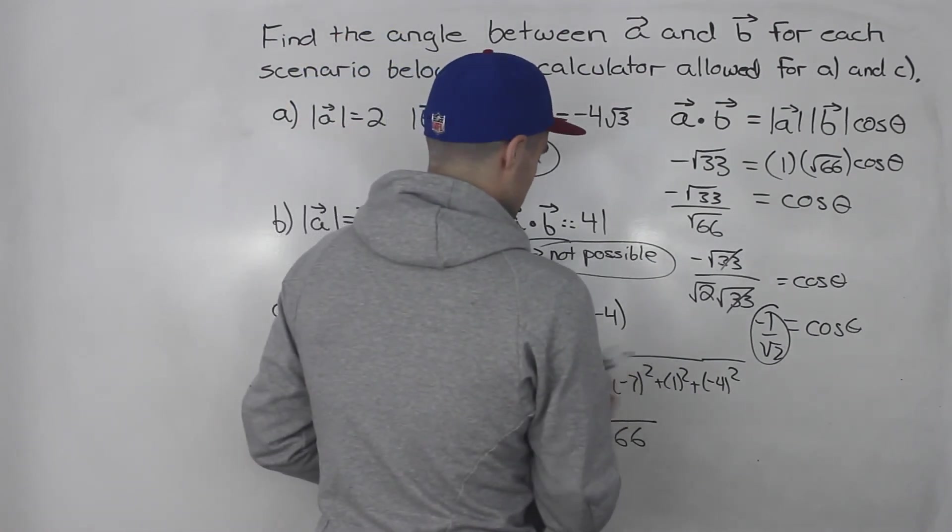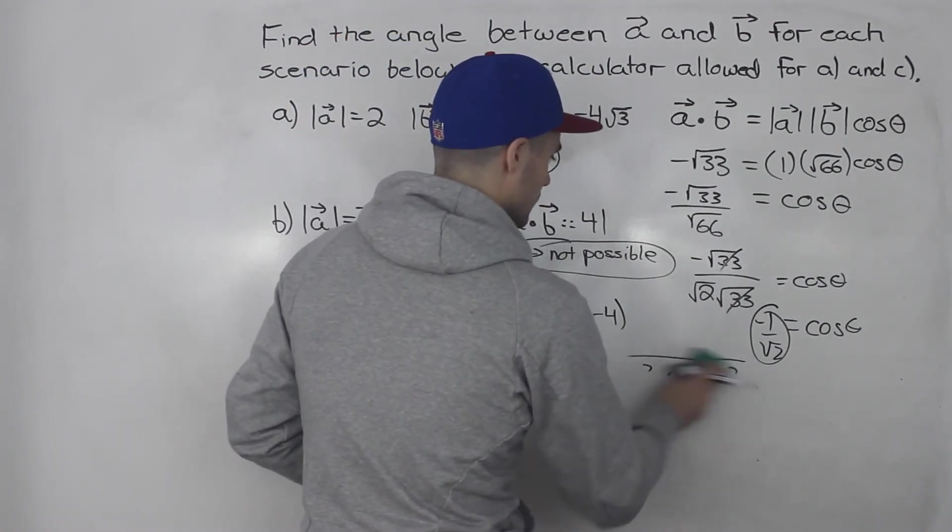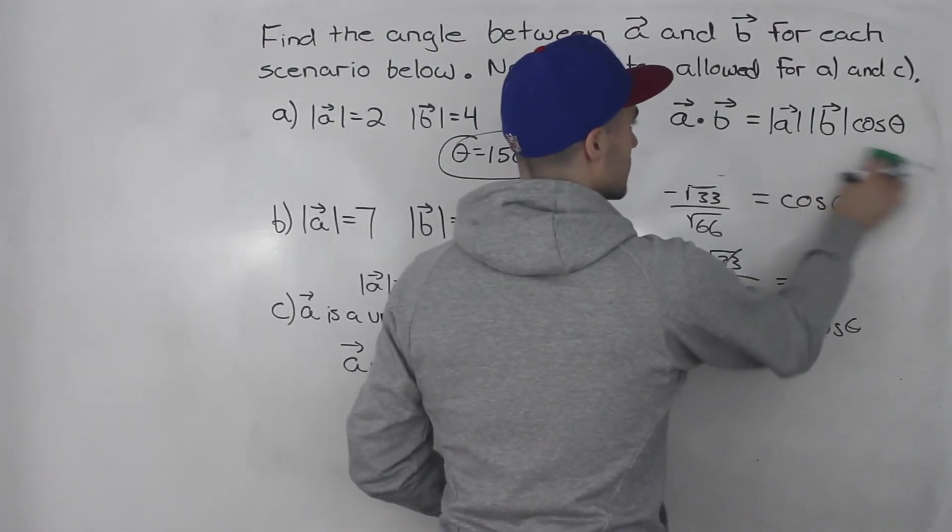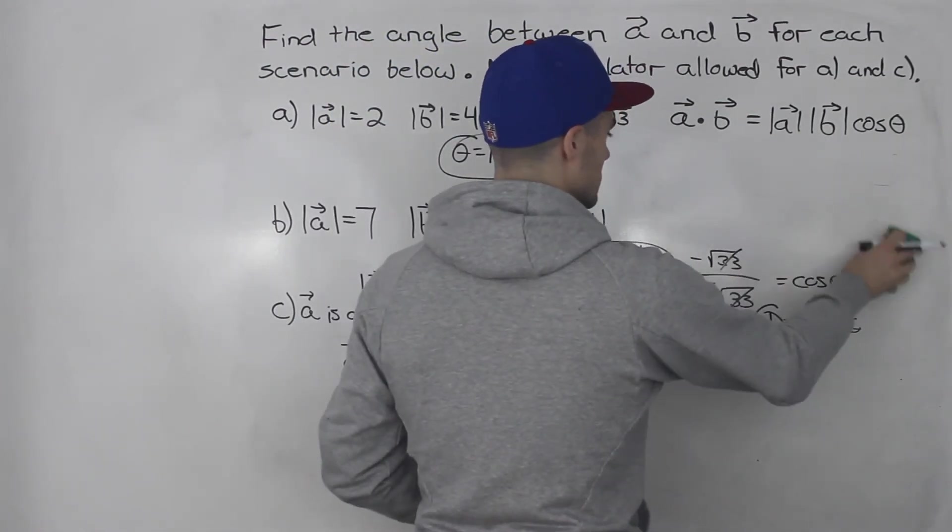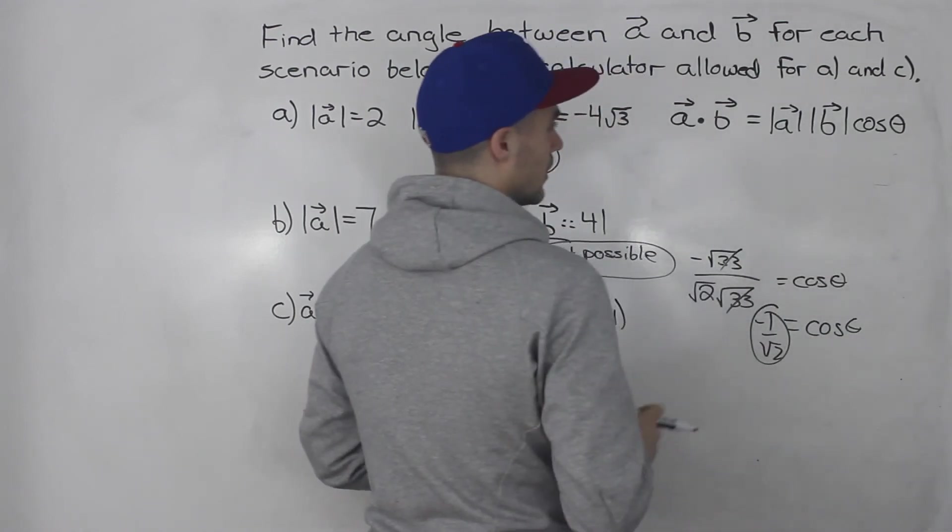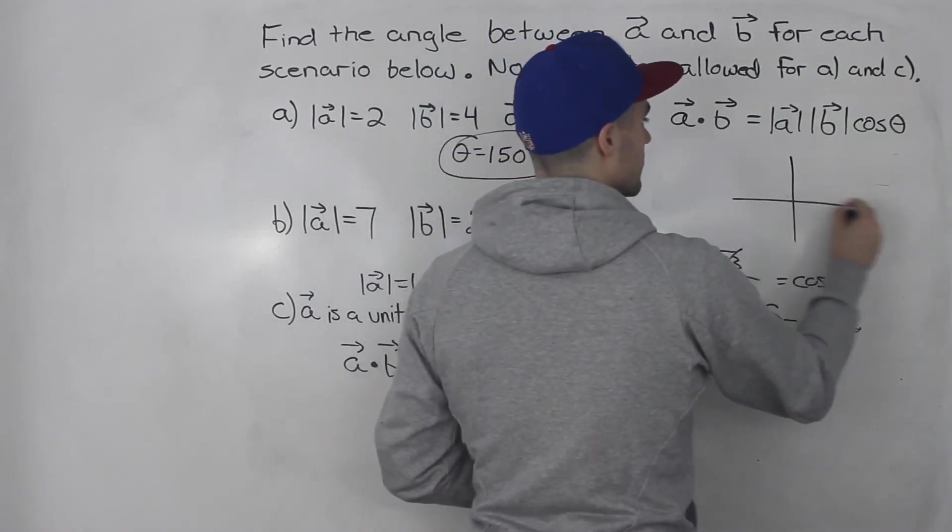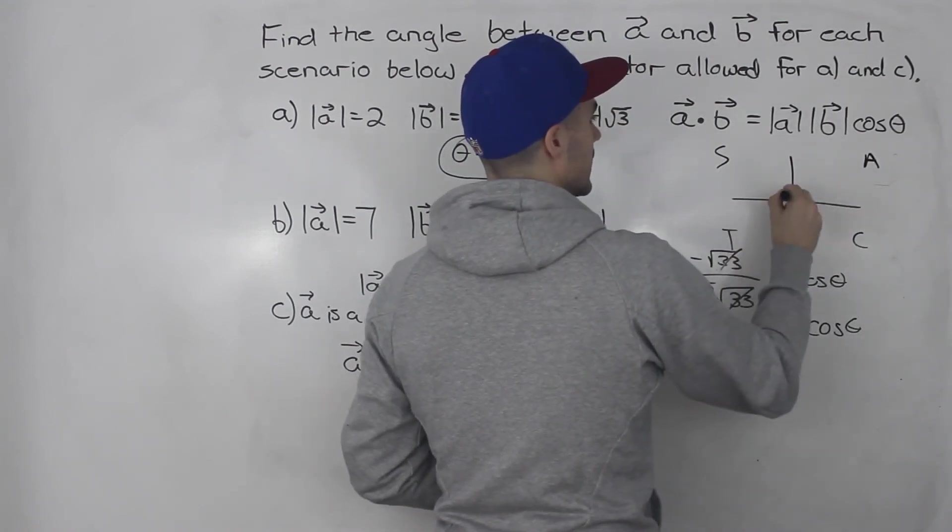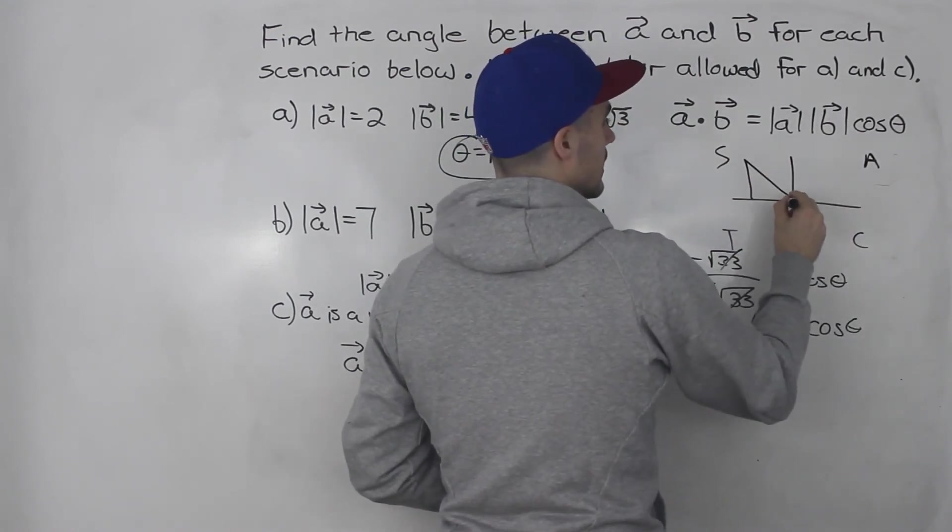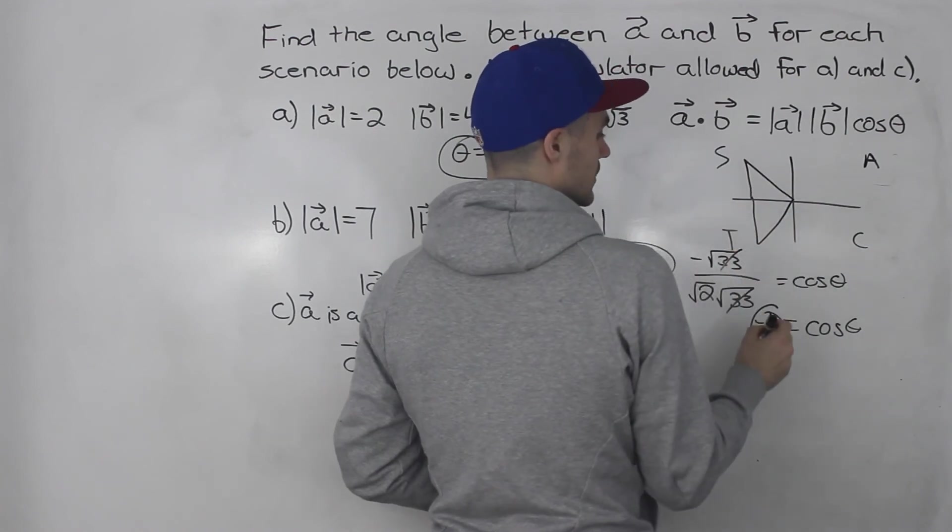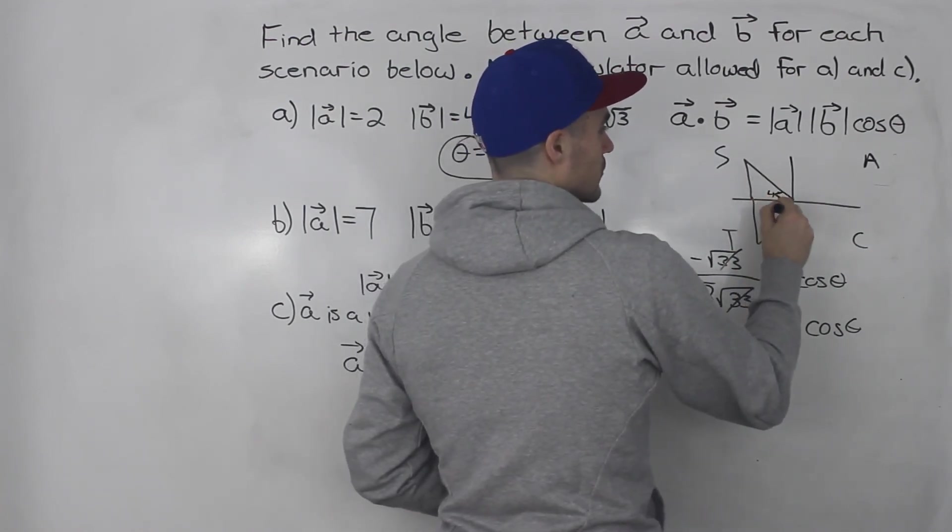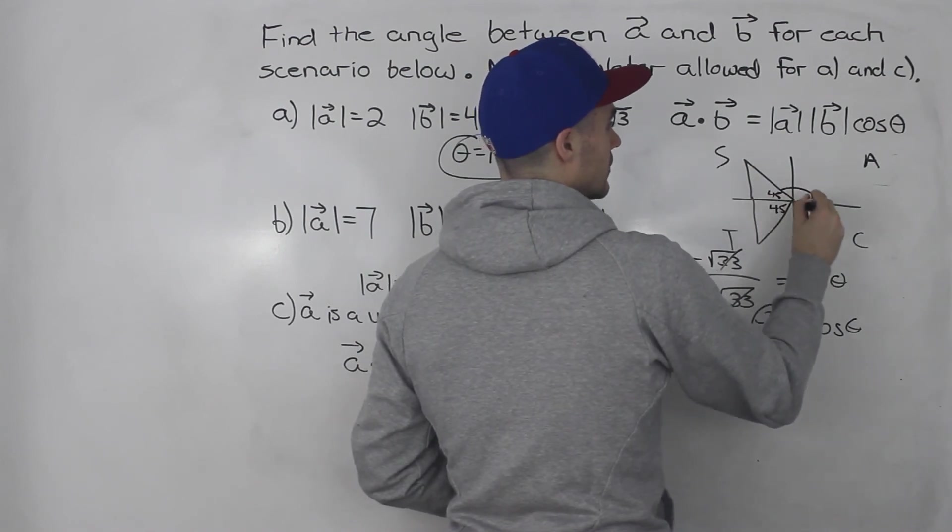So what we can do is we can use the CAST rule for this again. So when does cos theta equal negative 1 over root 2, which quadrant is that going to happen? Well, it's going to be negative in the sine quadrant and also the tan quadrant. Negative 1 over root 2, we know the reference angle is going to be 45 for both of these.